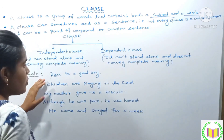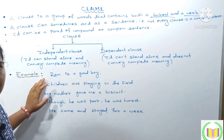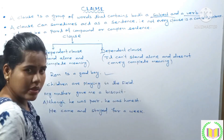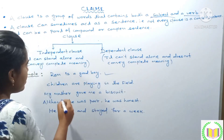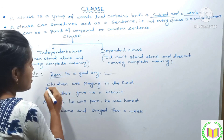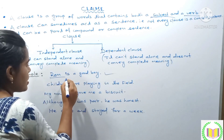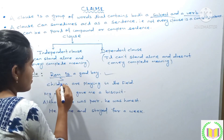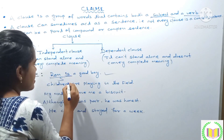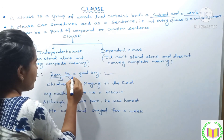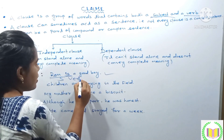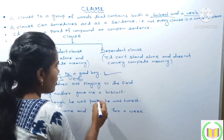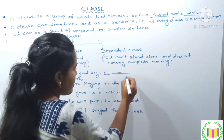For example, I am going to write a sentence: 'Ram is a good boy.' Here, Ram is the subject and 'is' is the verb. Ram is the subject; 'is' is the verb.